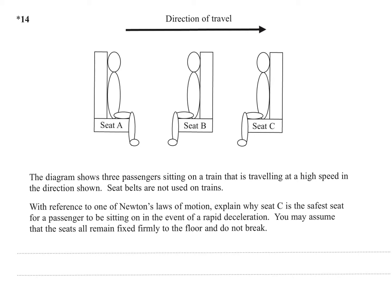The diagram shows three passengers sitting on a train that is travelling at high speed in the direction shown. Seatbelts are not used on trains. With reference to one of Newton's laws of motion, explain why seat C is the safest seat for a passenger to be sitting in the event of a rapid deceleration. You may assume that the seats all remain fixed firmly to the floor and do not break.